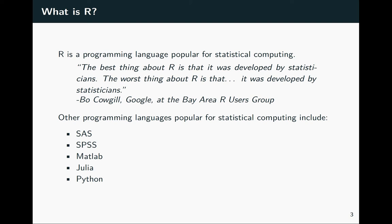I've listed here some other popular programming languages for statistical computing and data analysis. Those include SAS, SPSS, and MATLAB — all three of which are proprietary software rather than open source. But there are some open source options as well. Julia is one that's up and coming at the moment, and Python is also very popular for data science and machine learning.